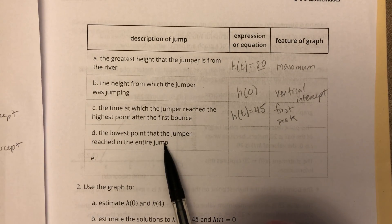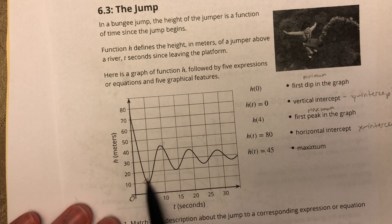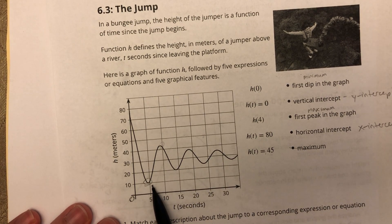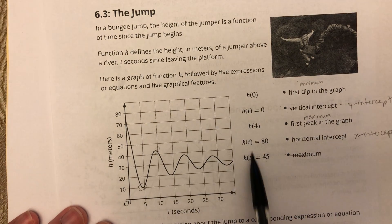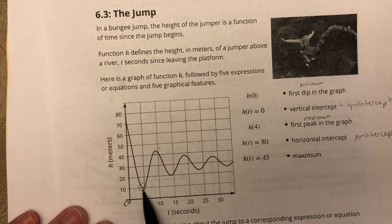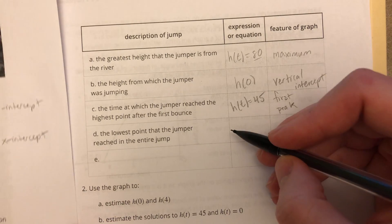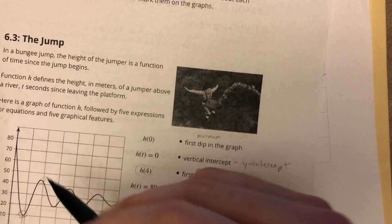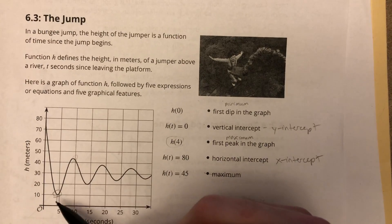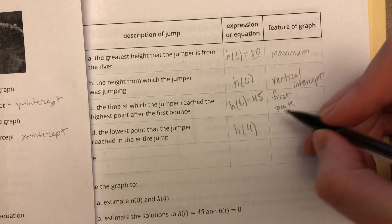Alright. The lowest point that the jumper reached in the entire jump. Well, this is the lowest point in the graph right here. So if I look at that, that looks like it's about 10. I don't see anything up here involving 10, but it does look like it's about four seconds. So H of four right here, that's talking about four seconds. So that's probably the lowest point expression, H of four. Alright. And we call that a dip in the graph, right? That's a low point, a dip. We call that sort of like a local minimum. So I would say first dip for this.